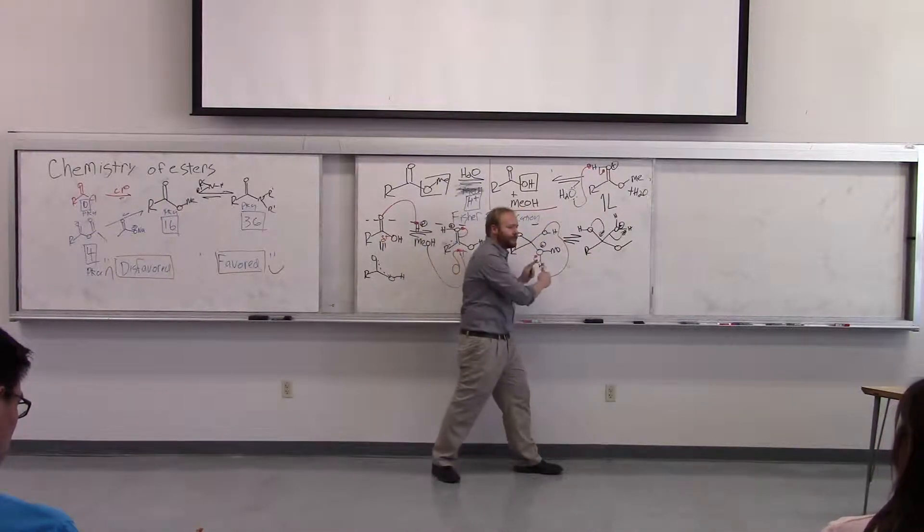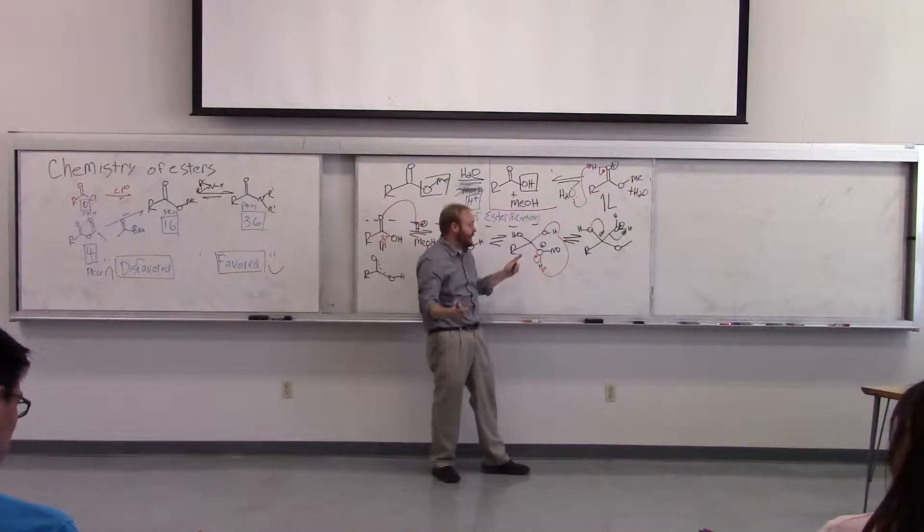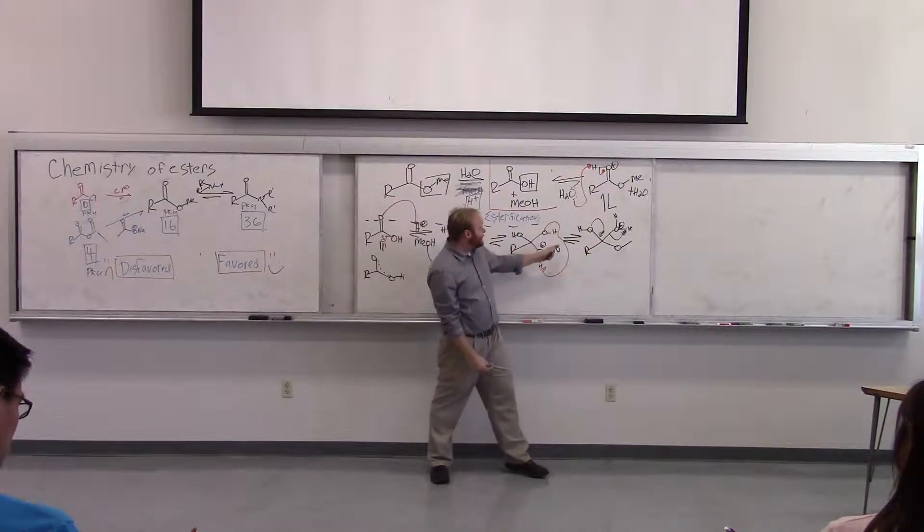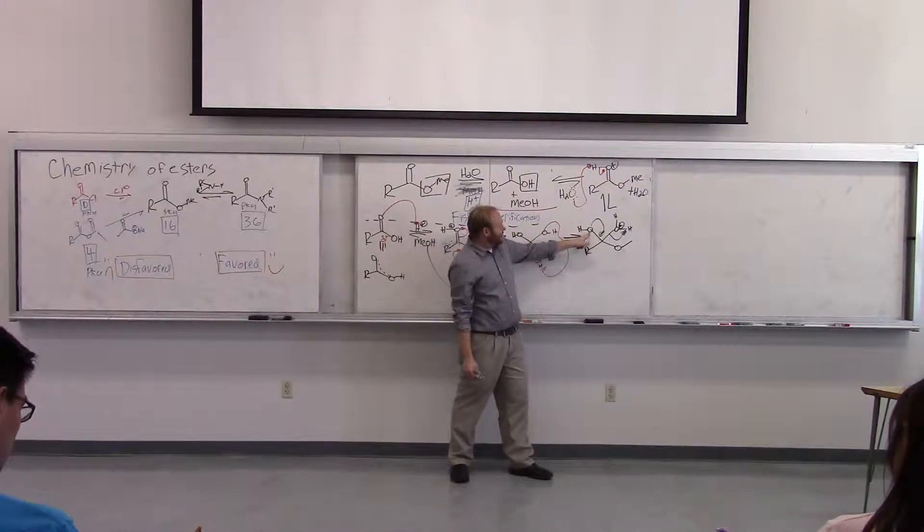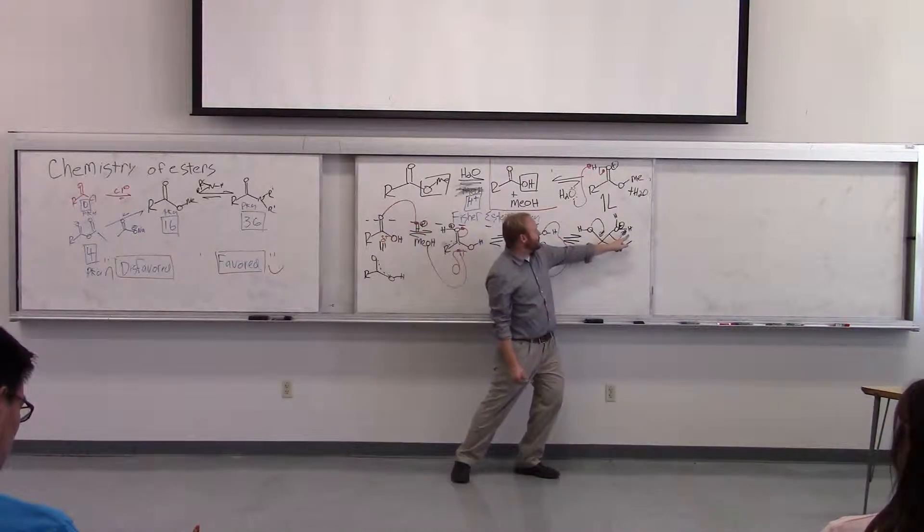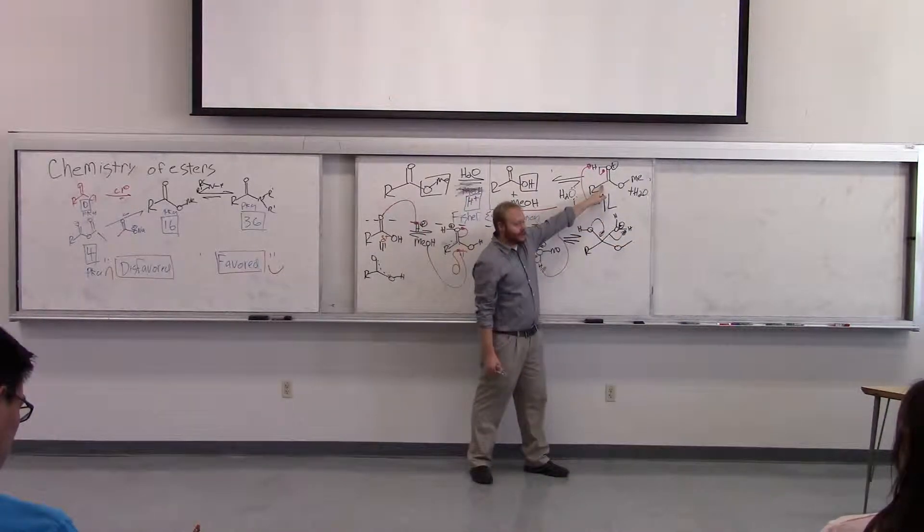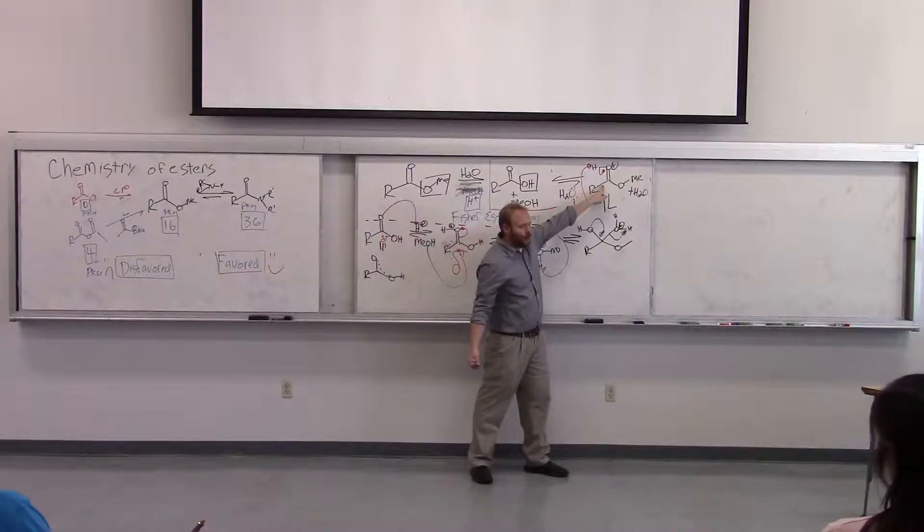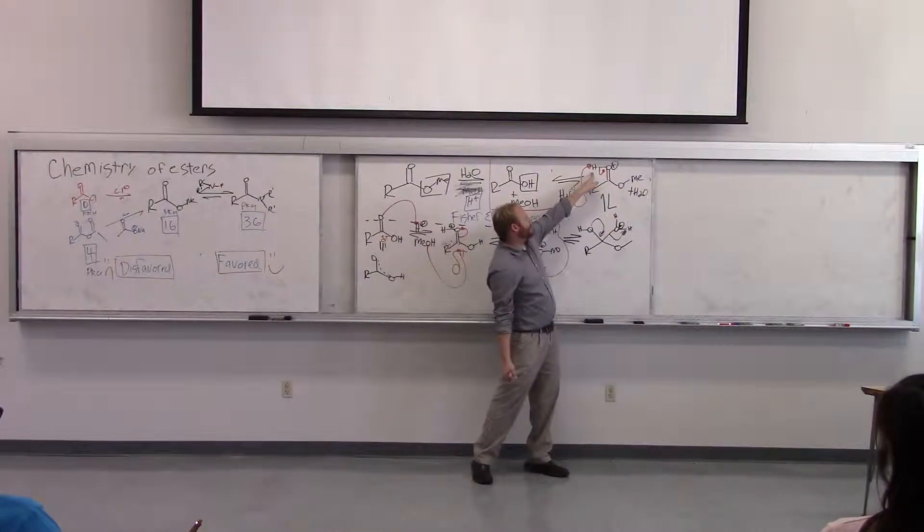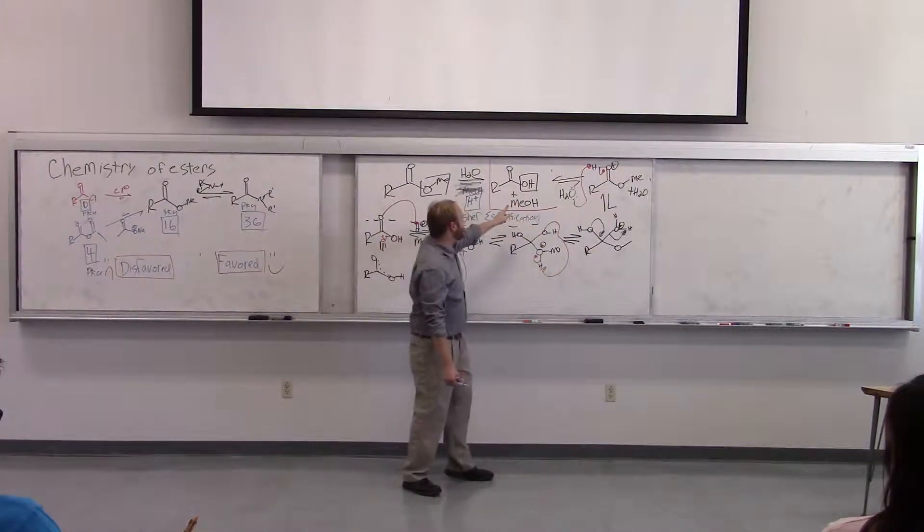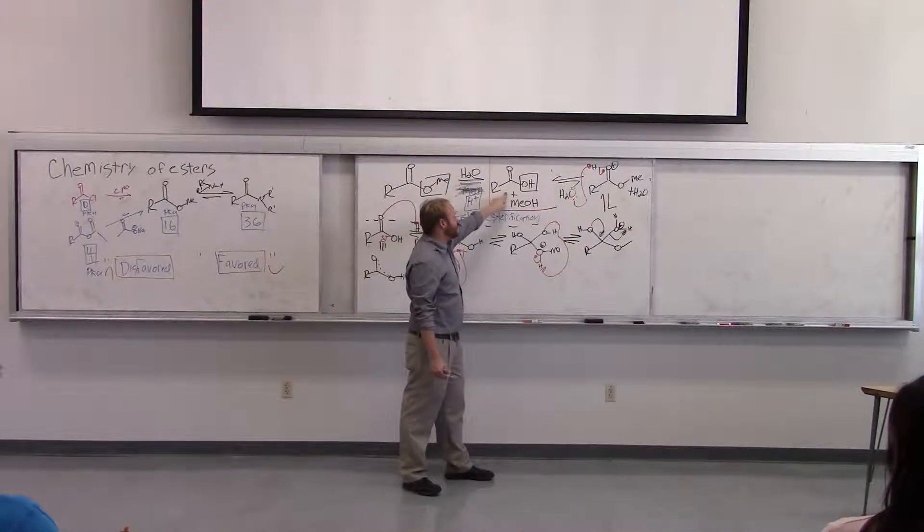Then we do a proton transfer between the methanol and one of the OHs to give us the water leaving group. This is going to be a pretty average equilibrium, maybe about one or two based on pKAs. But in this case, now this can kick out water as a leaving group and give us an ester, a protonated ester. And then the water that left in the previous step can grab this proton.